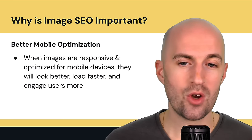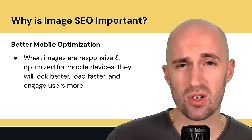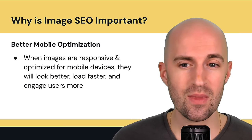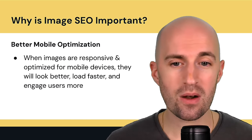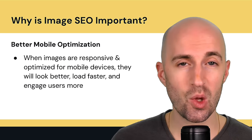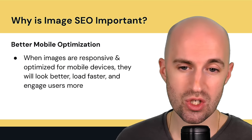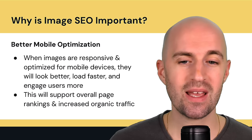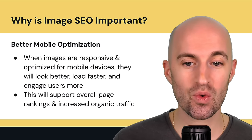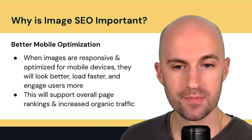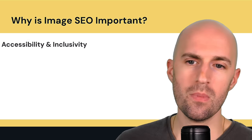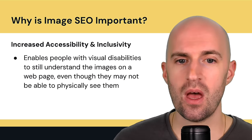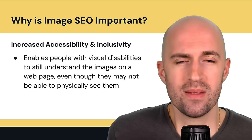Better mobile optimization: when images are responsive — meaning they resize or swap out depending on the device — and optimized in terms of size, especially for mobile devices, they'll look better, load faster, and engage users more. This supports overall page rankings and increased organic traffic.